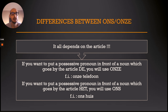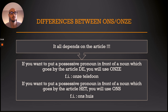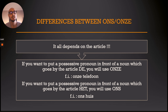So now we'll be speaking about the differences between ons and onze. There's actually only one difference — it all depends on the article. If you want to put a possessive pronoun in front of a noun which goes by the article de, you will use onze. For instance, telefoon — you say in Dutch de telefoon, so our phone would be onze telefoon. If you want to put a possessive pronoun in front of a noun which goes by the article het, for instance huis — in Dutch we say het huis — then you will say ons huis. So if the word goes with de, you say onze; if the word goes with het, you say ons.